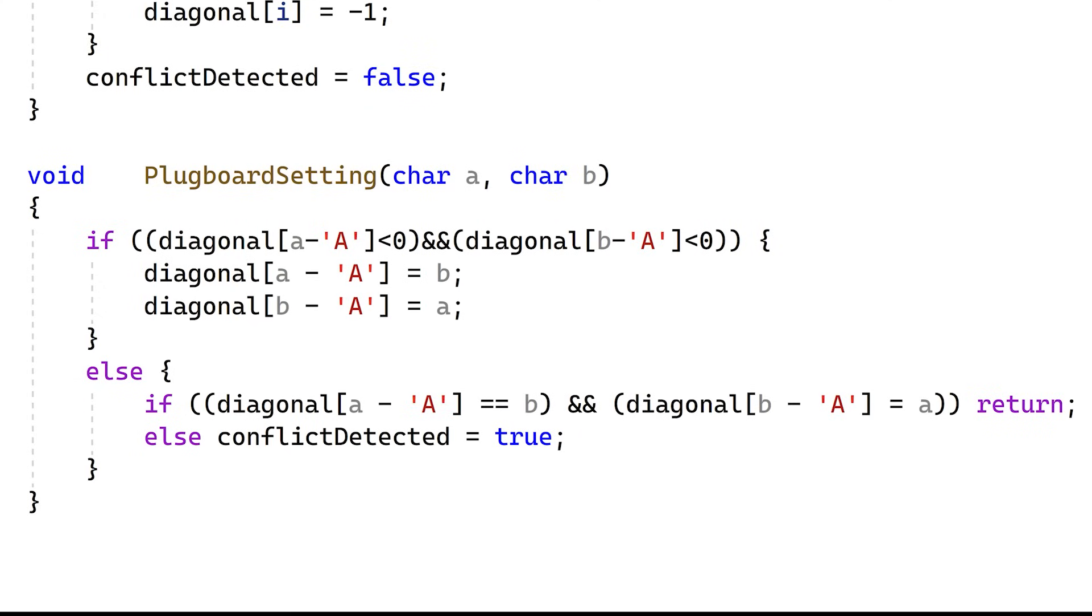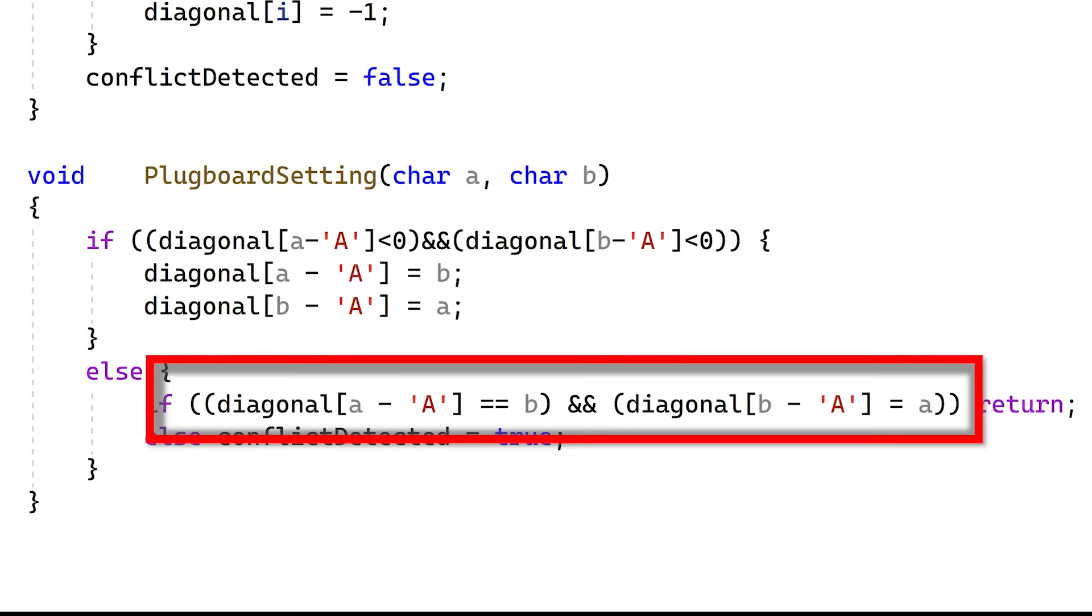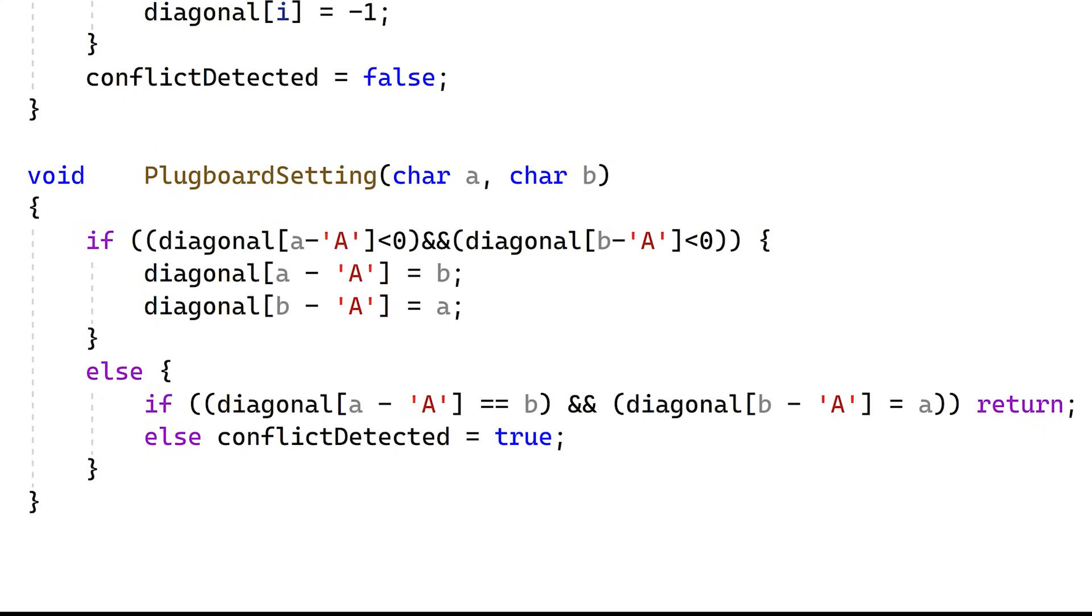But, if either of these positions is already occupied, we test to see that A maps to B, and B maps to A. If they do, then we return from the routine. We're just trying to add a pairing that's already there. But if either letter has something else in it already, then we've hit a conflict, and we set ConflictDetected to be true.